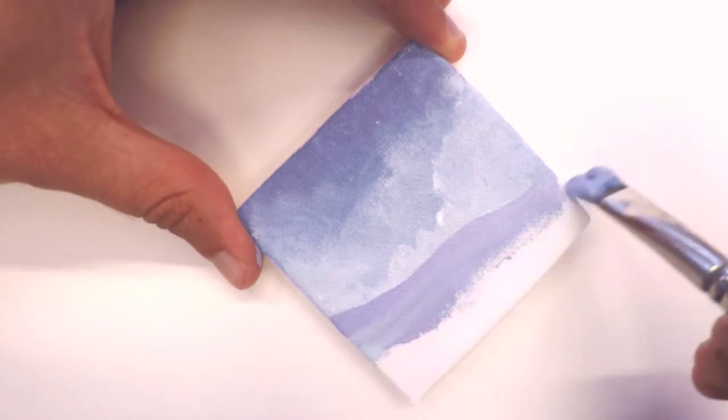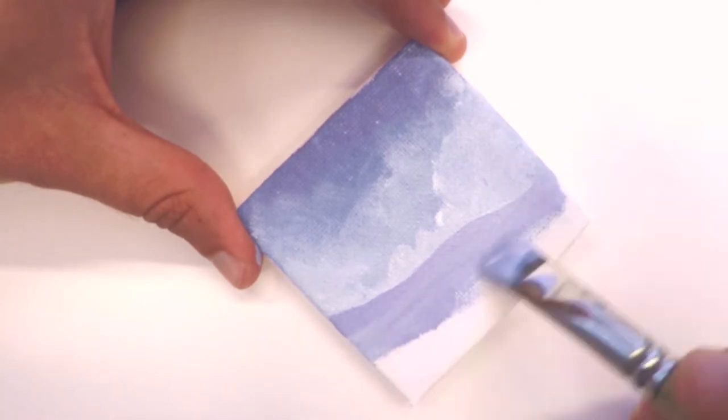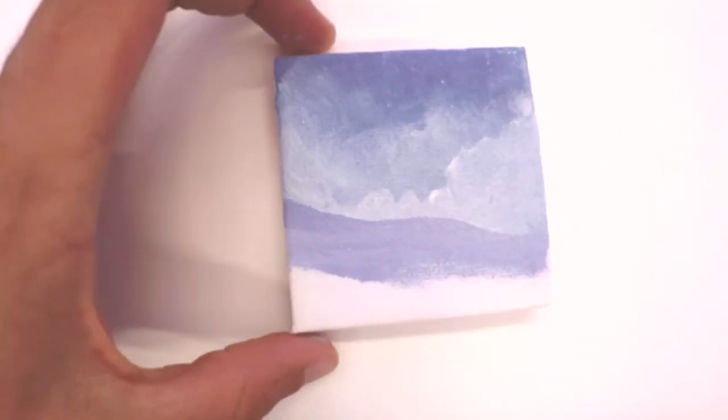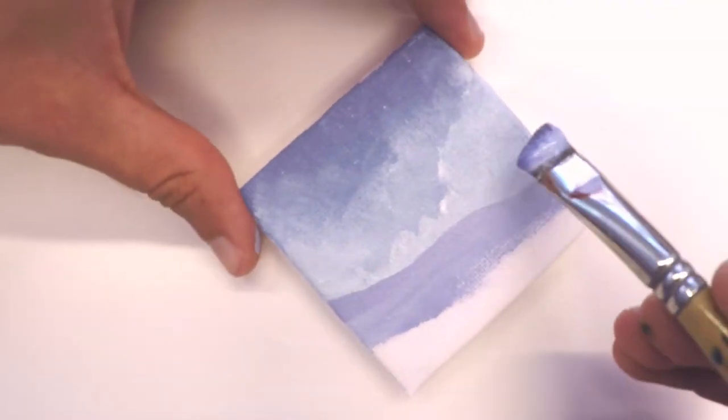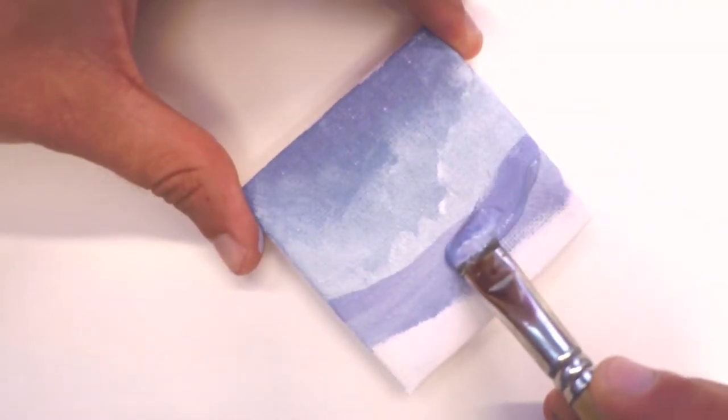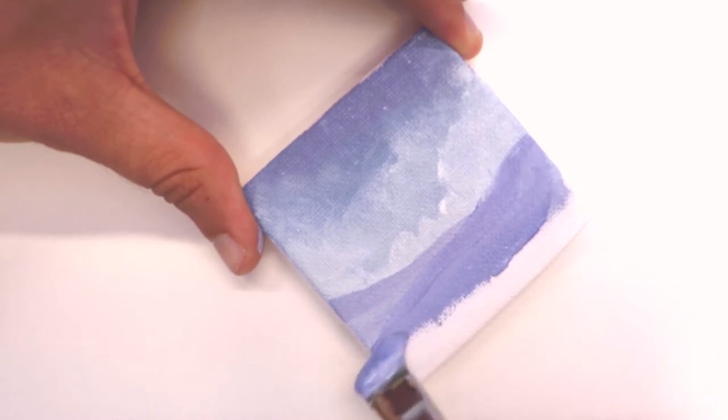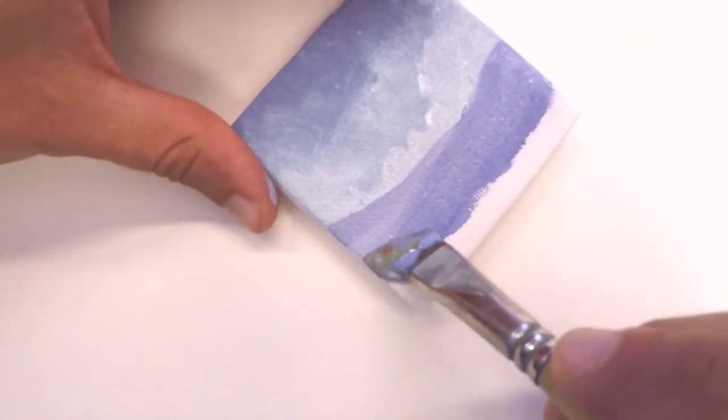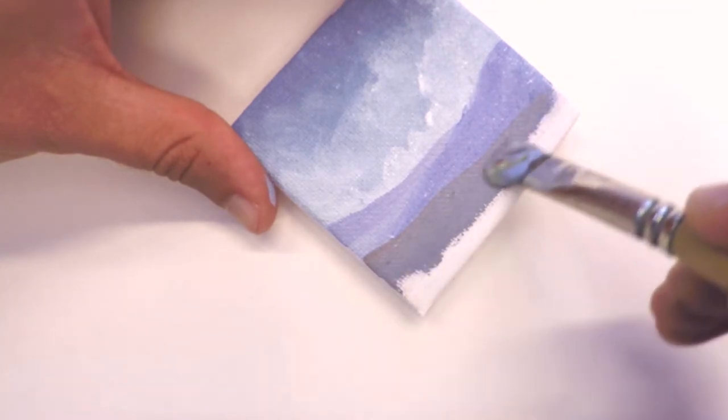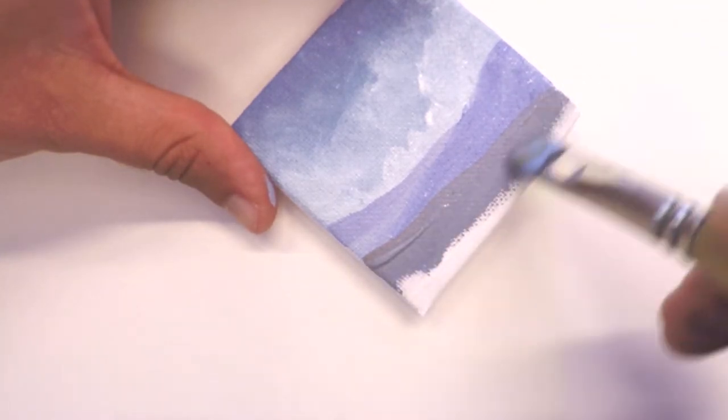Now I've dipped that same old brush into some blue and some rose to create this purple color. Just with a couple strokes, kind of diagonally, mostly horizontal, I'm just blocking in one rolling hill at a time. And every time I add a new roll, I dip my brush into a little bit of rose.